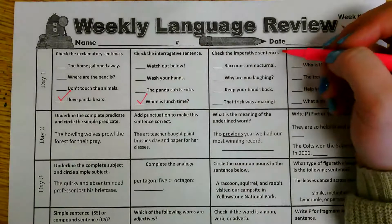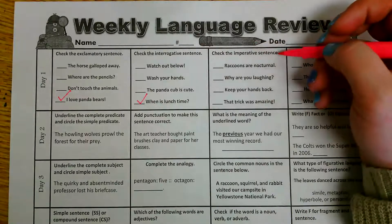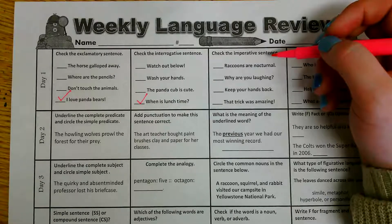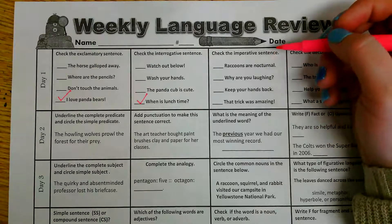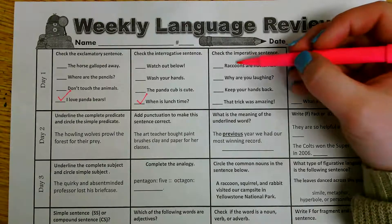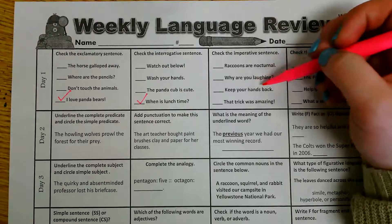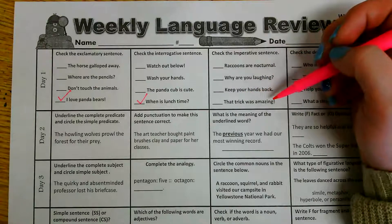Alright, next one, check the imperative sentence. Well, I know that imperative sentences give some kind of command. They are telling someone to do something. So we have raccoons are nocturnal, why are you laughing, keep your hands back, that trick was amazing.